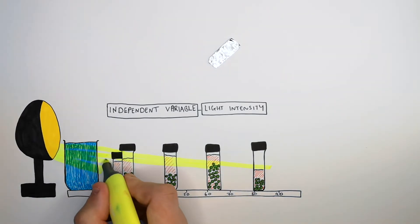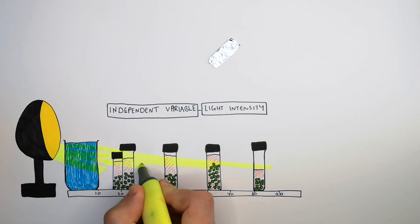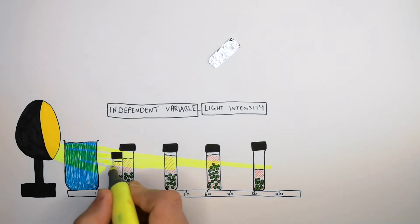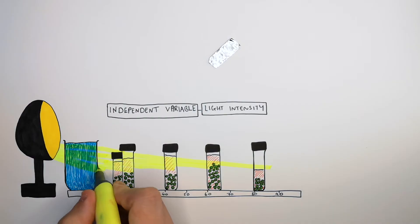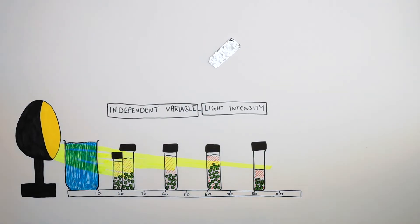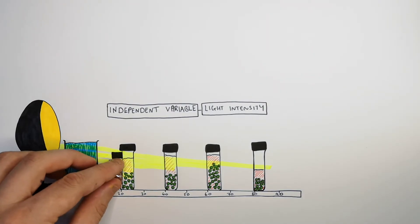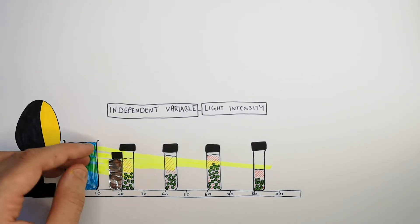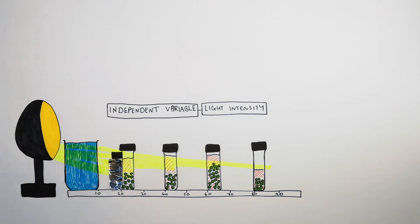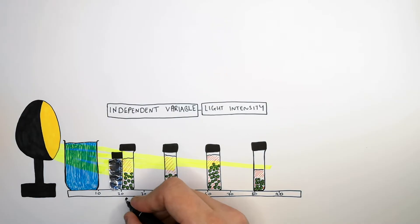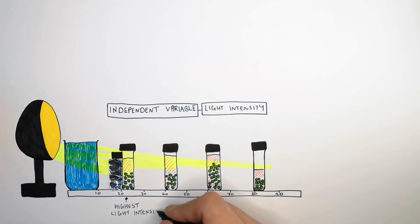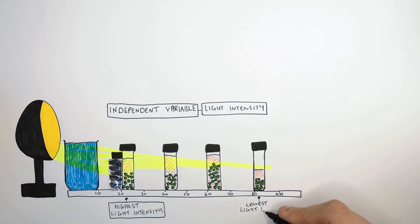If the control flask wasn't covered in tin foil, light would hit the algal balls and they would photosynthesize. But we cover it with tin foil, so light does not hit the algal balls and no photosynthesis should take place in that flask. The flask closest to the light source is where you'll find the highest light intensity, and the flask furthest away is where you'll find the lowest light intensity.